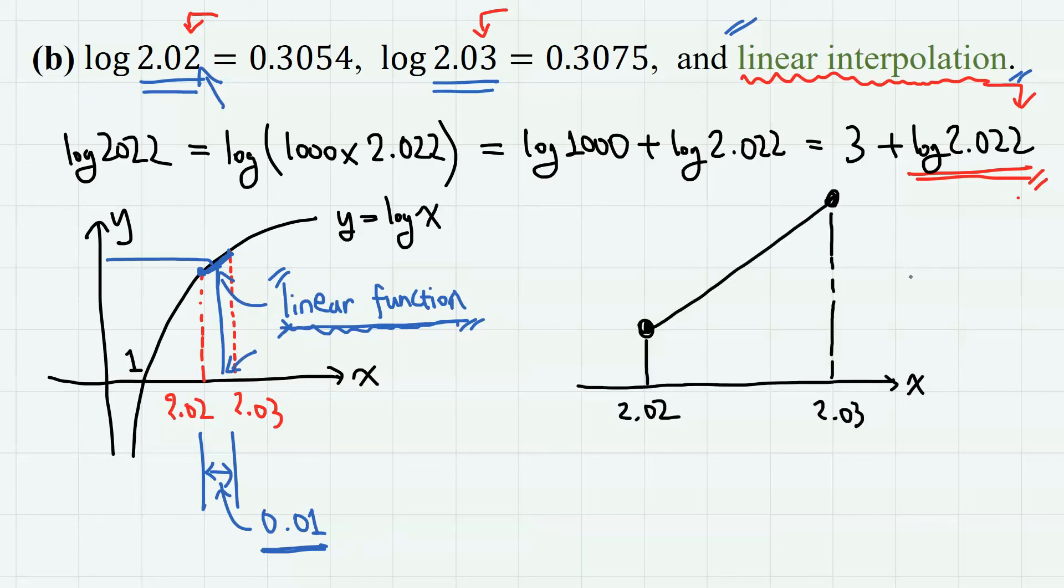Between 2.02 and 2.03, we assume that the logarithmic function is very close to linear. Why this is useful is because now we can use the property of linear proportion.